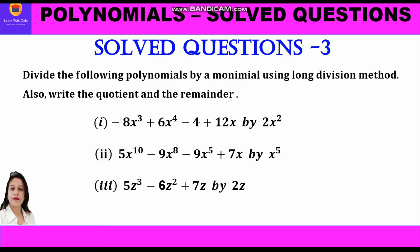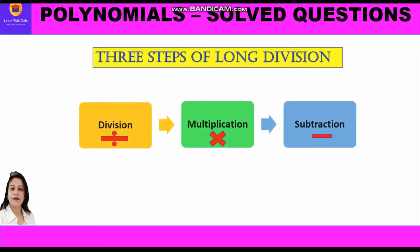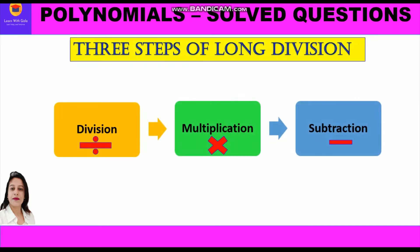We also need to write the quotient and the remainder. There are three parts to this question. Before we start, let us keep in mind the three steps involved in the long division method. The first step is division, the second is multiplication, and the third is subtraction.